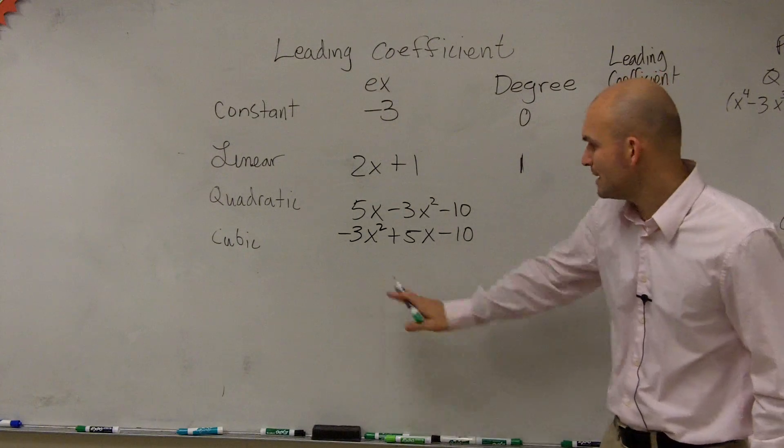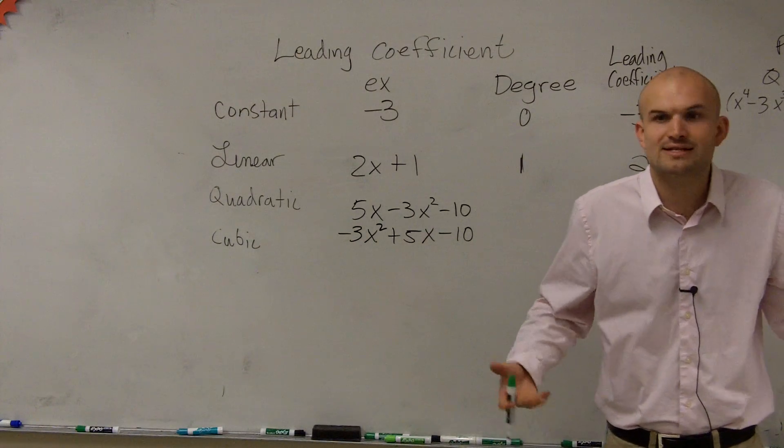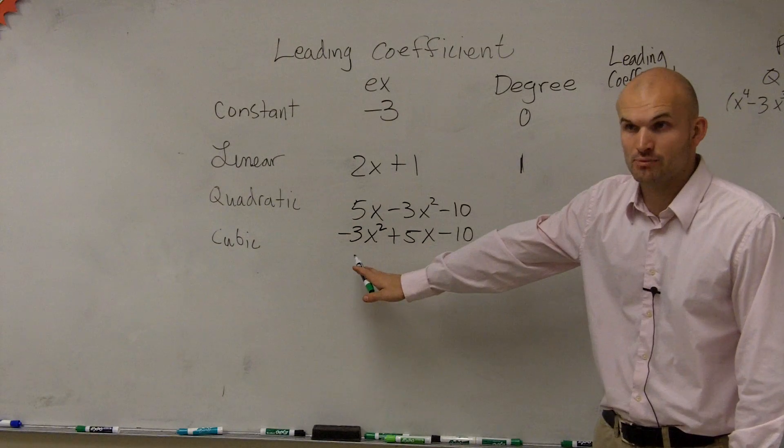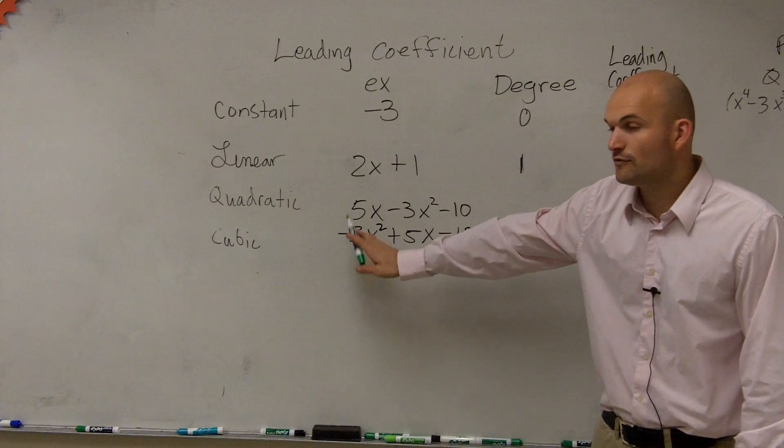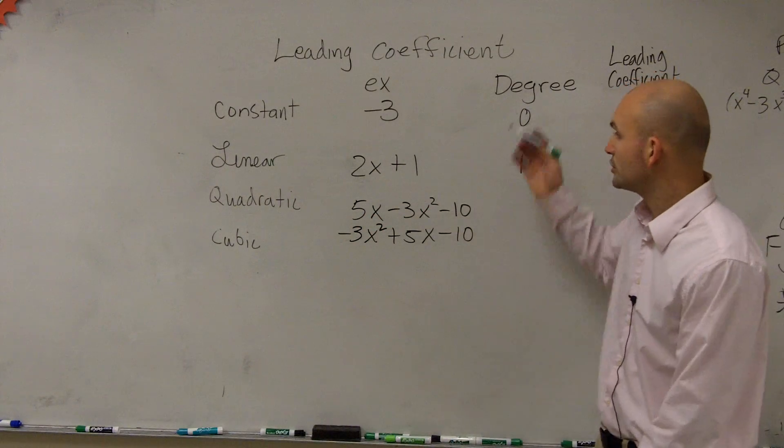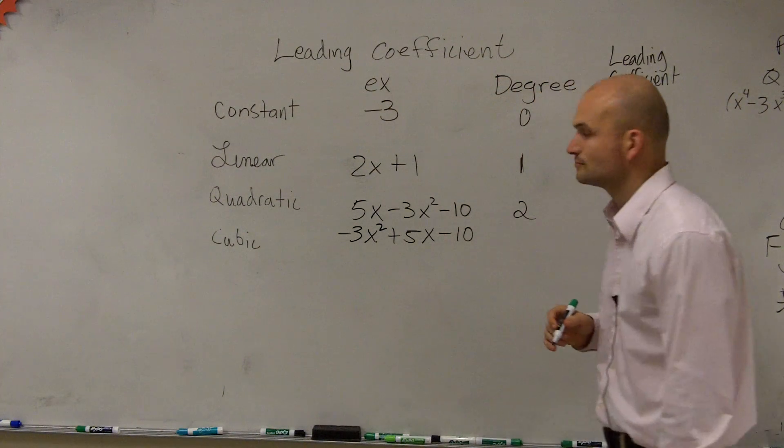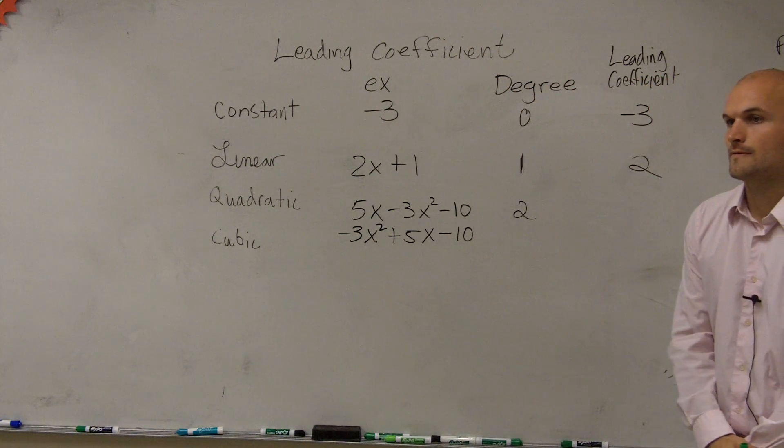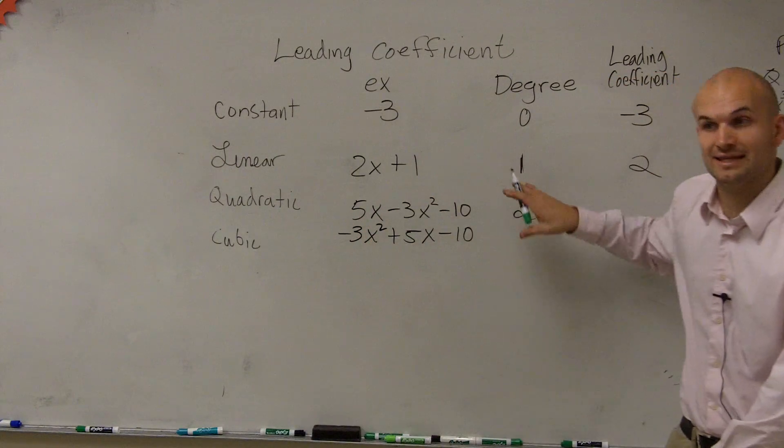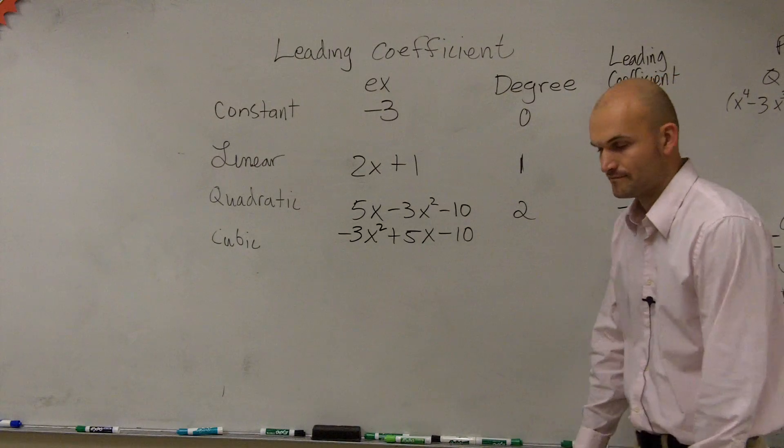So, now, we need to determine I have three terms, right? Which term has the largest degree? Which one has the exponent that is going to be the largest? This is my first monomial that has the largest degree. So, therefore, the degree of this monomial is 2. So, therefore, the degree of the polynomial, or the quadratic, is going to equal 2. So, what is the leading coefficient? Negative 3. Very good.